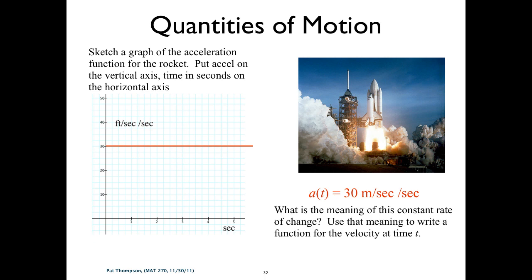Tell the person next to you: what's the meaning of that constant rate of change? What's our broad, robust meaning for this constant rate? Then use that meaning to write a function for velocity of time t. We've kind of already done that, but just practice.